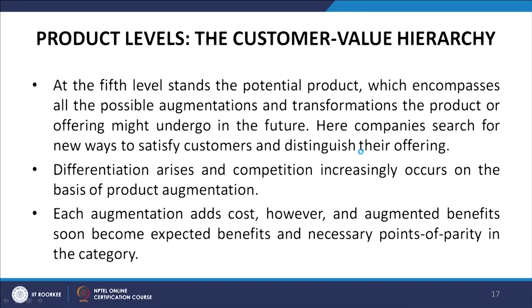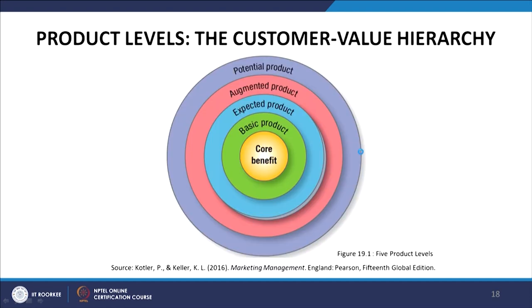Differentiation arises and competition increasingly occurs on the basis of product augmentation. Each augmentation adds cost; however, augmented benefits soon become expected benefits and a necessary point of parity in the category. So these are the five levels: core benefit, basic product, expected product, augmented product, and potential product — the five levels of the customer value hierarchy.